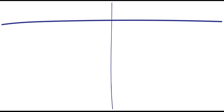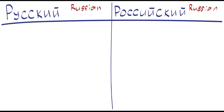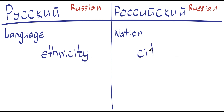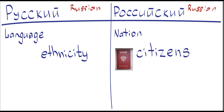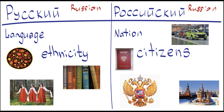There we have two adjectives. Российский refers to Russia as a federation, as a country — in English, it's Russian. Русский refers to ethnic identity and culture — in English, it's again Russian. So here people can be Russian, but not Russian at the same time.